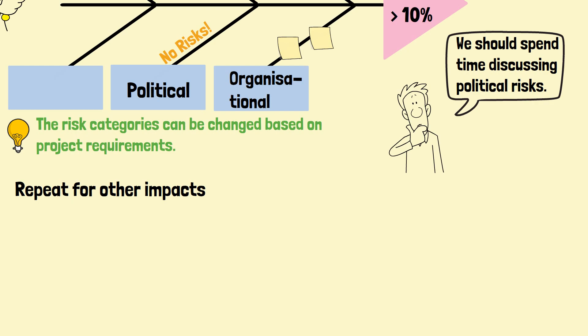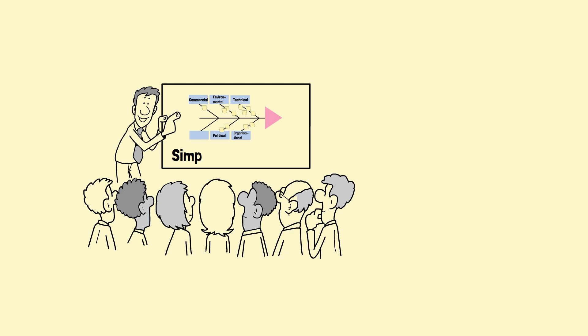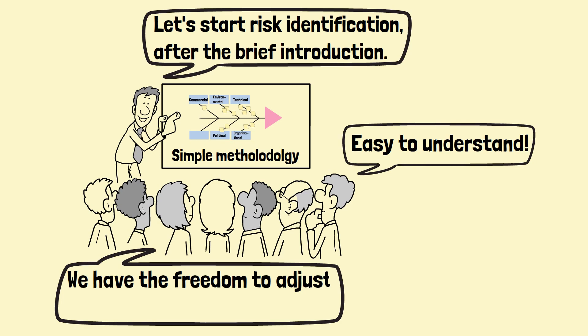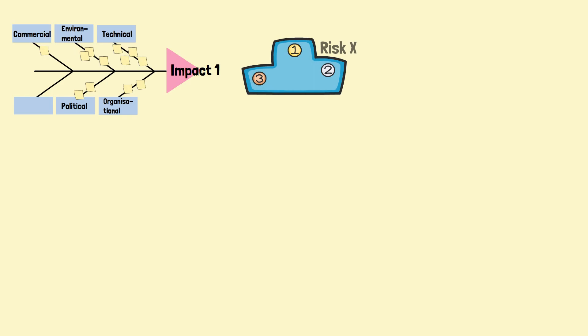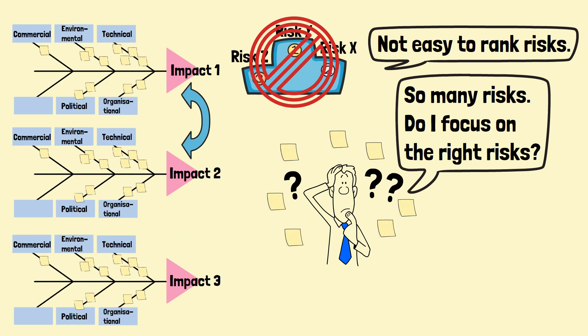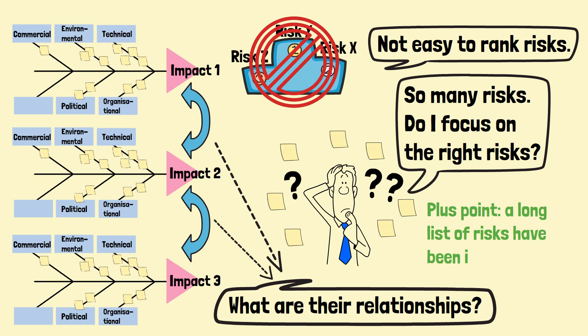The main advantage of the Ishikawa Diagram is its simplicity. Everyone can quickly understand the process and start contributing to the discussion. The structured approach allows adjustment of the diagram for accommodating different types of risks. However, the simple method cannot prioritize and rank risks, and participants may put energy on risks that have less impact. Moreover, it will be more complicated if there are a few fishbone diagrams for different impacts. Nevertheless, it meets the requirement of identifying risks.